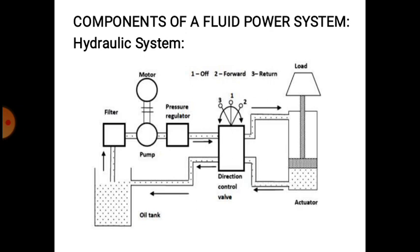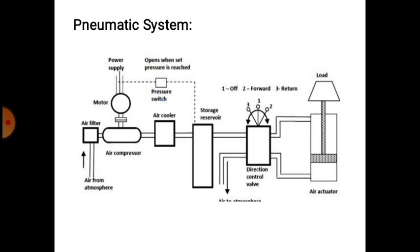Next we will see the components of the pneumatic system: compressor, air cooler, reservoir, direction control valve, actuator, and pressure switch. The compressor is connected to the electric motor. The pressure switch sends signals to the motor — when the pressure is low in the reservoir, the motor starts automatically, and when the pressure equals the set pressure in the reservoir, the motor automatically turns off.